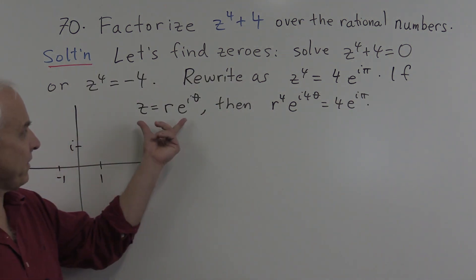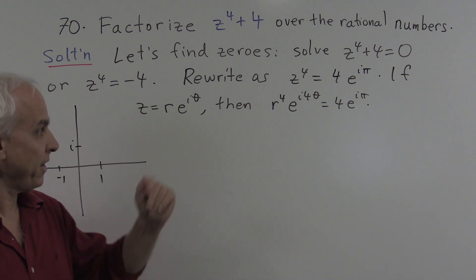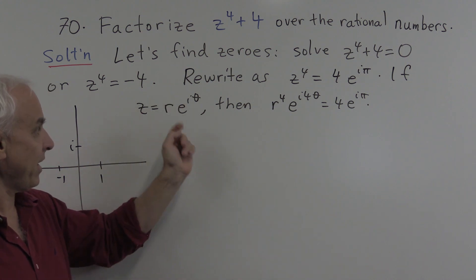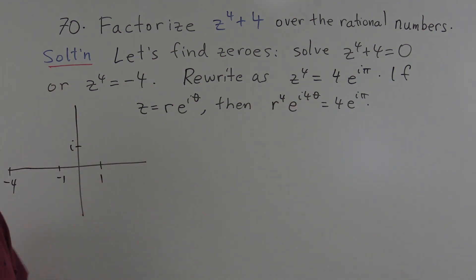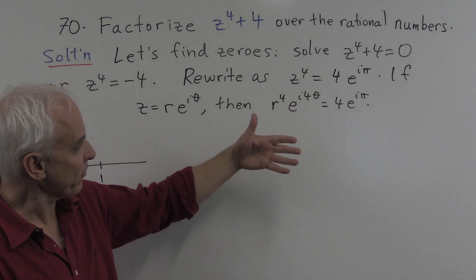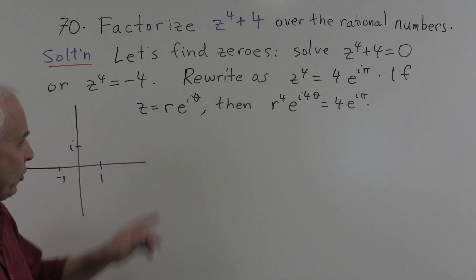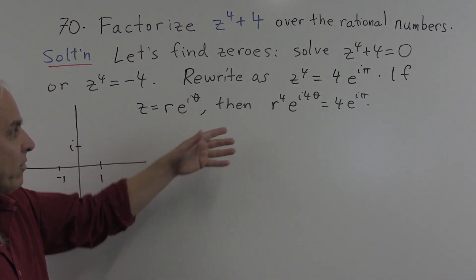Okay, because I remind you that if you take this to the fourth power, then you get r to the fourth and e to the i theta to the fourth is e to the i four theta. All right, so this is the equation sort of rewritten in polar forms. We're looking for r and theta that will make it true.